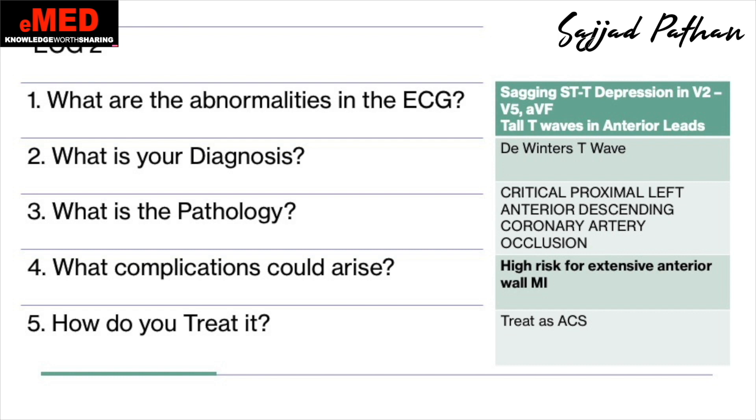What complication could arise? Similar to Wellens, these patients are at high risk of extensive anterior wall MI. How do you treat it? Just like Wellens or an ACS — if they are symptomatic they go for a primary PCI; if they are asymptomatic they go for a PCI which can be a bit delayed, maybe on day two or day three.